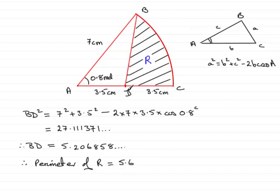we have DC, that's 3.5, and we have the length of BD. Don't round this up, so we've just got 5.206858, and so on. And, when you work that out, it comes to 14.3068, and so on. We were asked to give the answer to 3 significant figures, and if you give that to 3 significant figures, you find you've got 14.3 centimeters to 3SF.